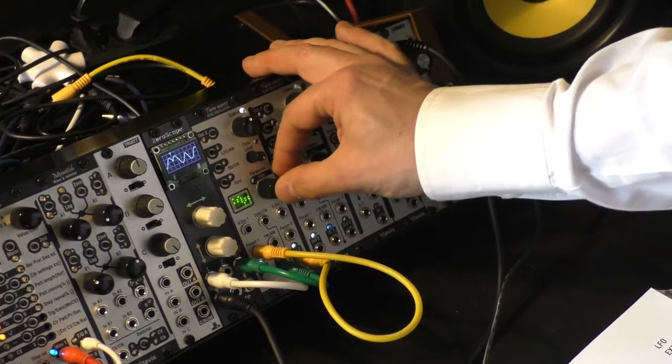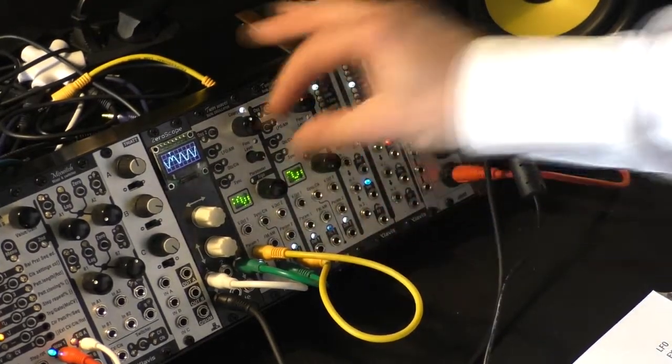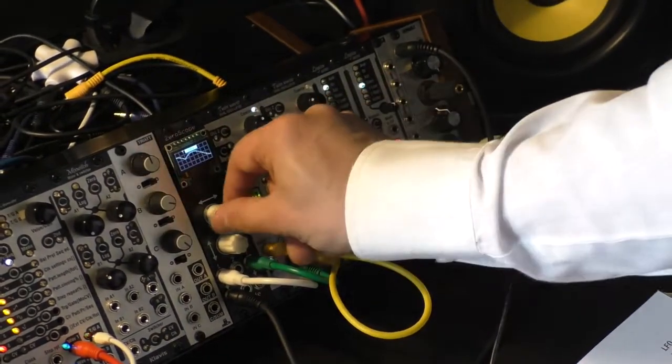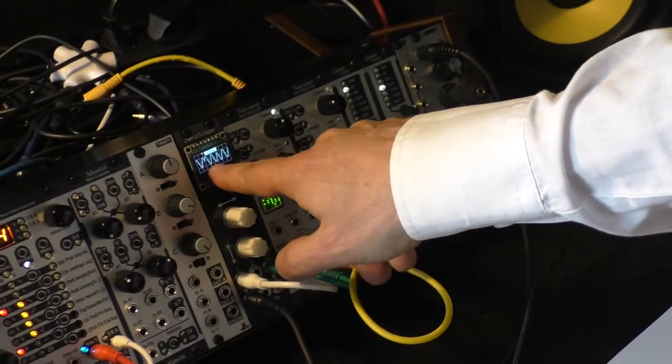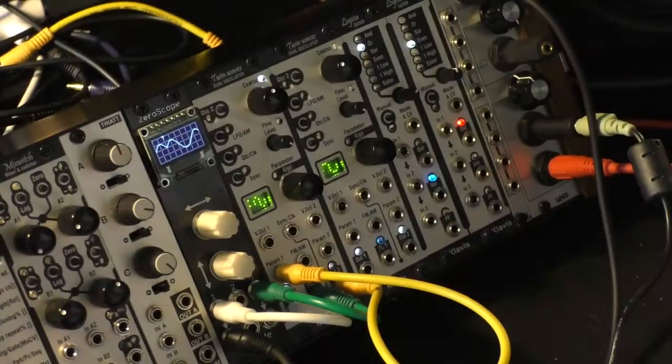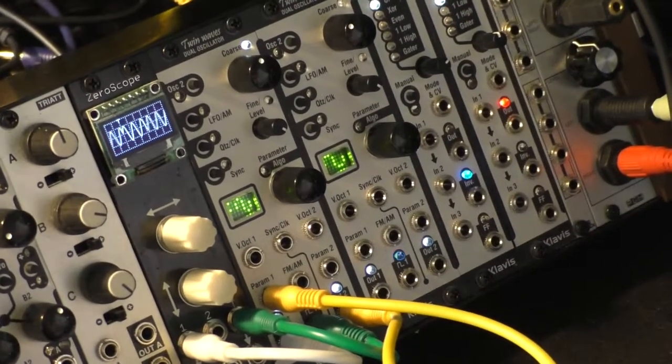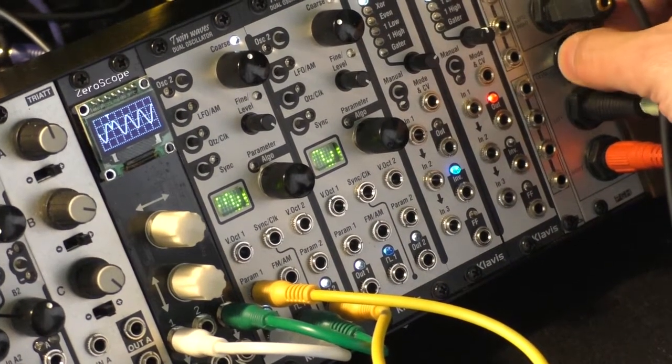And then we continue with the sine. As you could see here, the wave is phase reverted. So we go through zero, and the sound is really played backwards, which allows it to have no cut, no sharp cuts. So it's very smooth.